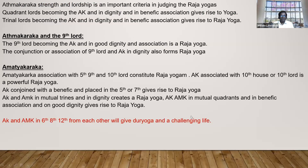Amityakaraka and Putrakaraka in mutual aspect; Amityakaraka and 5th lord in conjunction or mutual aspect; Amityakaraka and Darakaraka in mutual aspect; Putrakaraka and 5th lord in mutual aspect; Putrakaraka and Darakaraka in mutual aspect; 5th lord and Darakaraka in mutual aspect. Atmakaraka's strength — it is not the lordship alone, it is the strength also. Who becomes Atmakaraka? If the Lagna Lord, 5th Lord, 9th Lord, or 10th Lord becomes the Atmakaraka and is well placed in a Kendra-Kona, in dignity, in Swakshetra, or in Dikabala, in Parivartana — it is one of the highest Rajayogas.